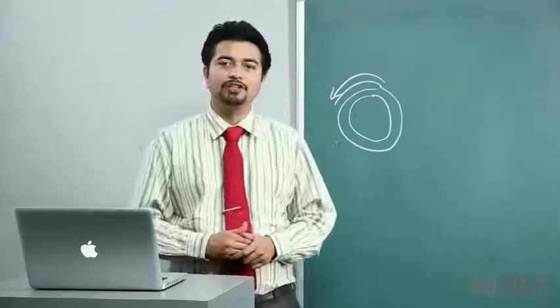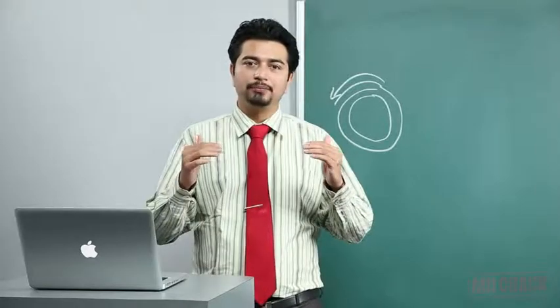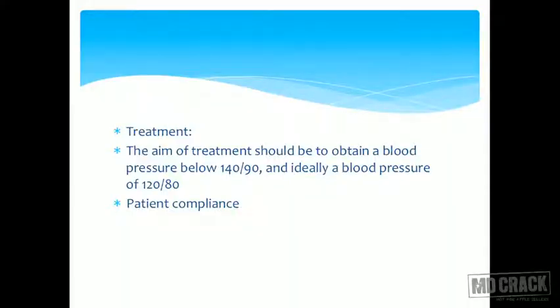The aim definitely of the treatment is bringing the blood pressure below 140 by 90. Ideally bring it as low as possible unless the patient is asymptomatic, but a fair target would be 120 by 80. We are very happy if the patient maintains a blood pressure close to this level. So that is what our treatment target should be - 120 by 80, the classical hypertension definition.